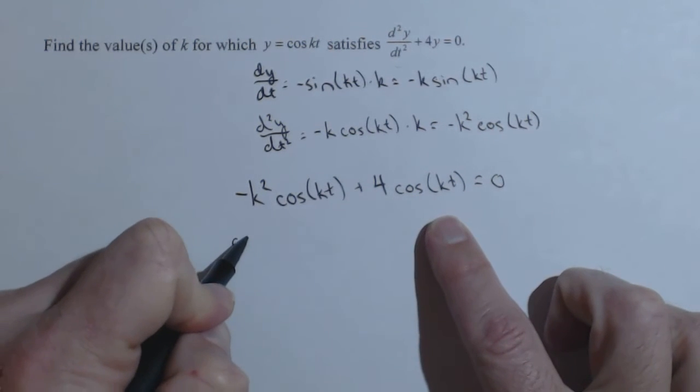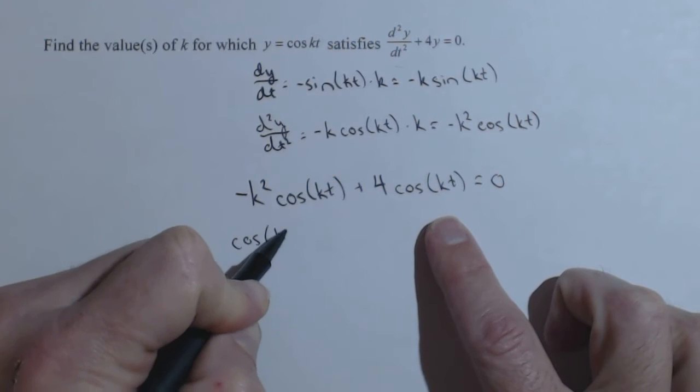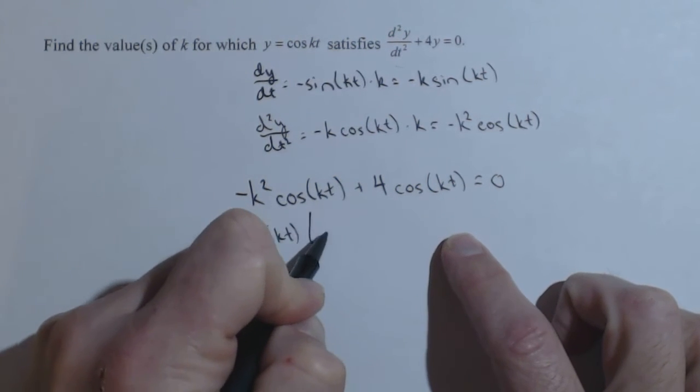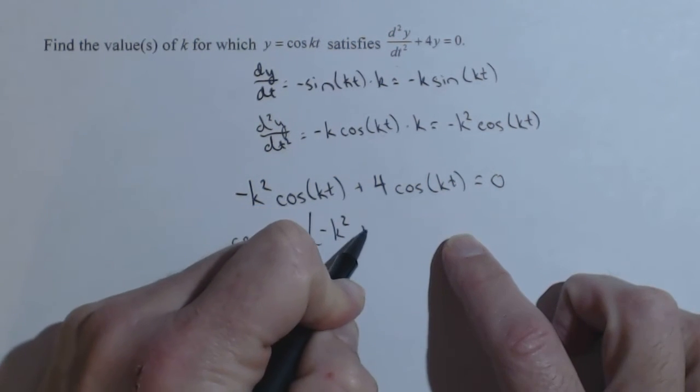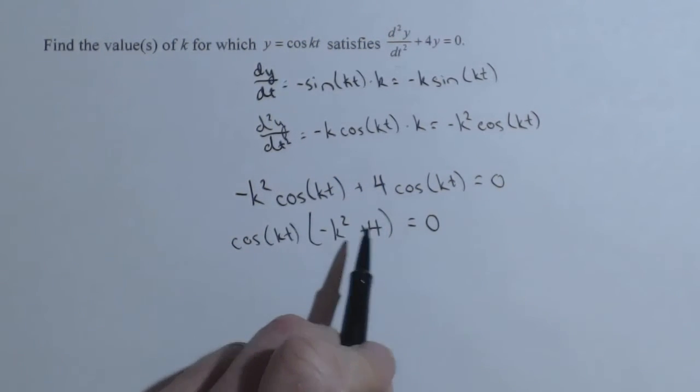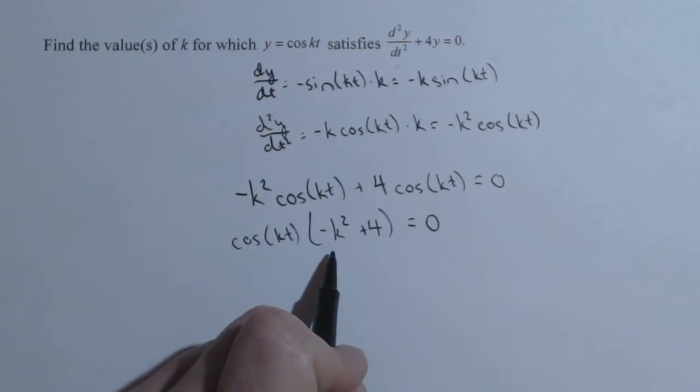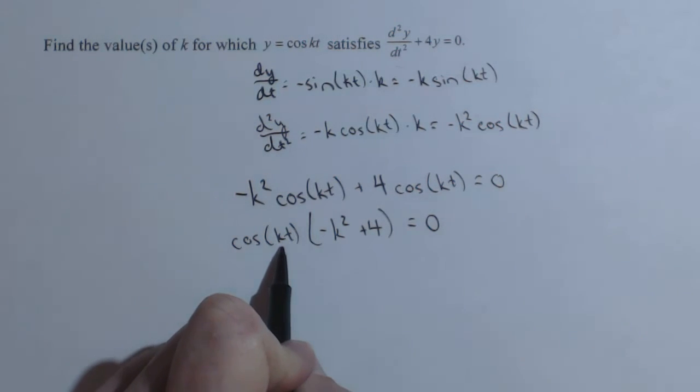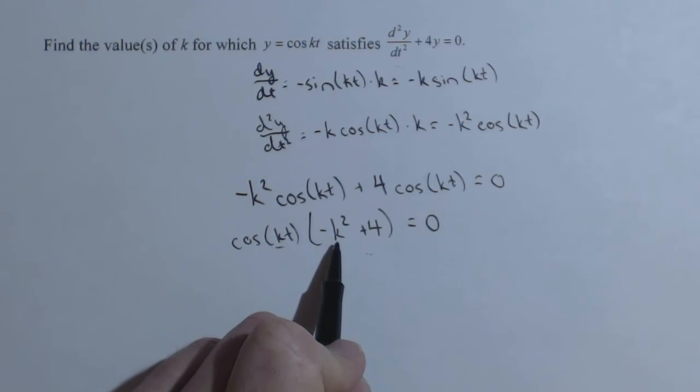So we can factor out the cosine of kt, times negative k squared plus 4 equals 0. And to find the values of k, we only need to deal with this part because this is going to depend on both k and t. But this is going to give us the k's that will always make this 0.